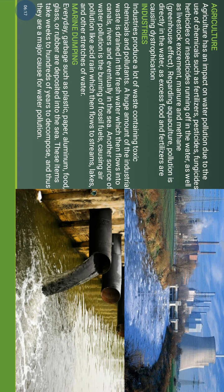Industry produces a large amount of waste, including contaminant chemicals and pollutants. A huge amount of industrial waste is drained into fresh water, which then flows into canals, rivers, seas, and oceans. Another source of water pollution is the burning of fossil fuels, causing air pollution such as acid rain that flows into streams and water bodies. Marine dumping involves everyday garbage such as plastic, paper, aluminum, food, glass, and rubber deposited into the sea. These items take hundreds of years to decompose and are major causes of water pollution. Plastic bags alone are not decomposed for over 100 years.